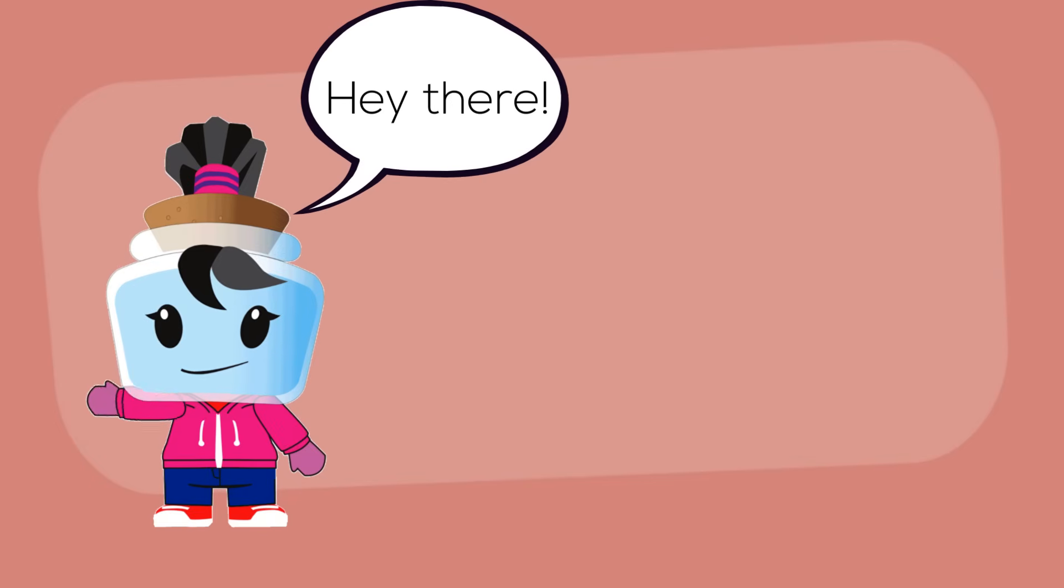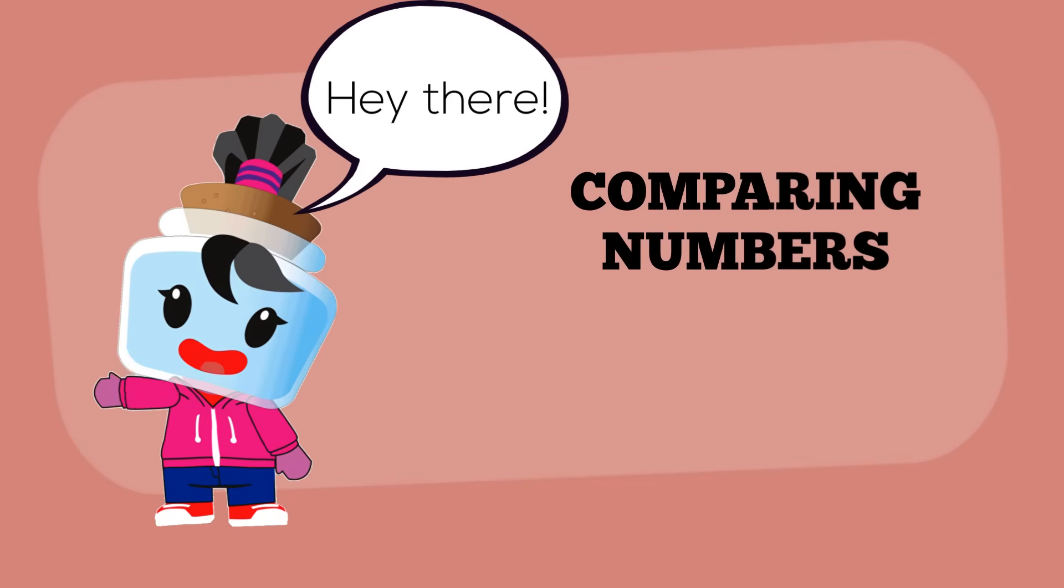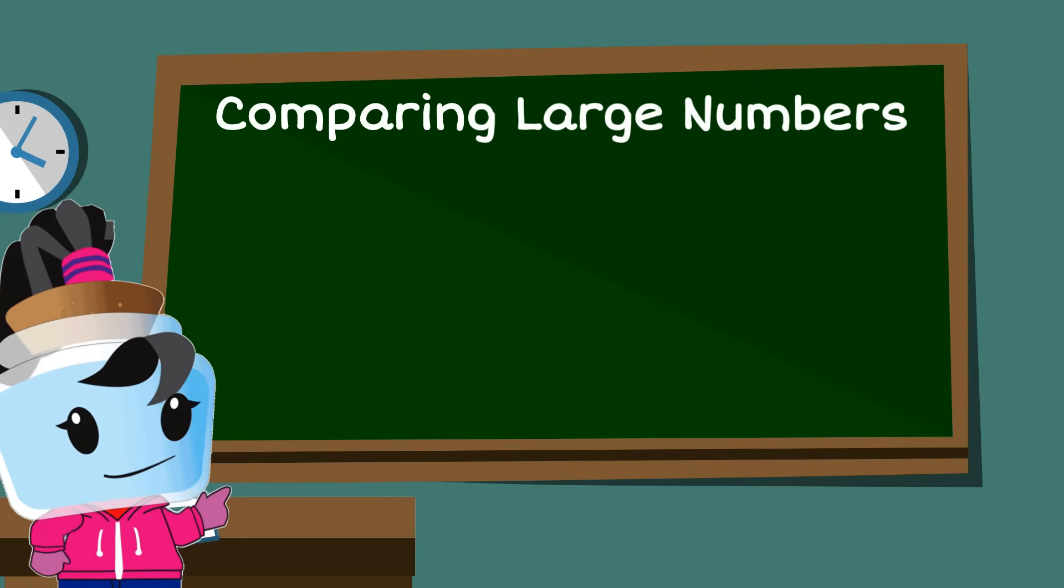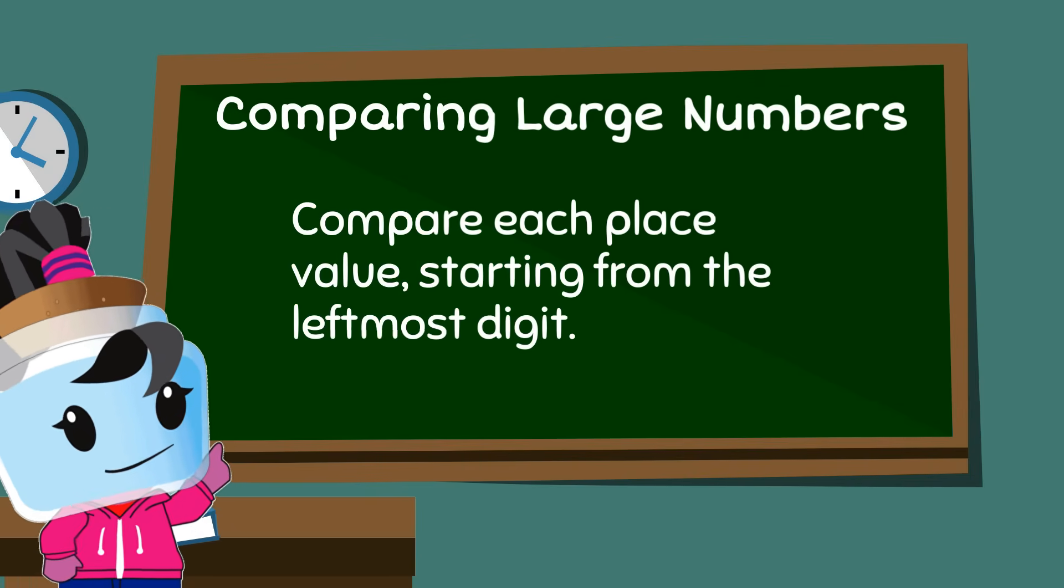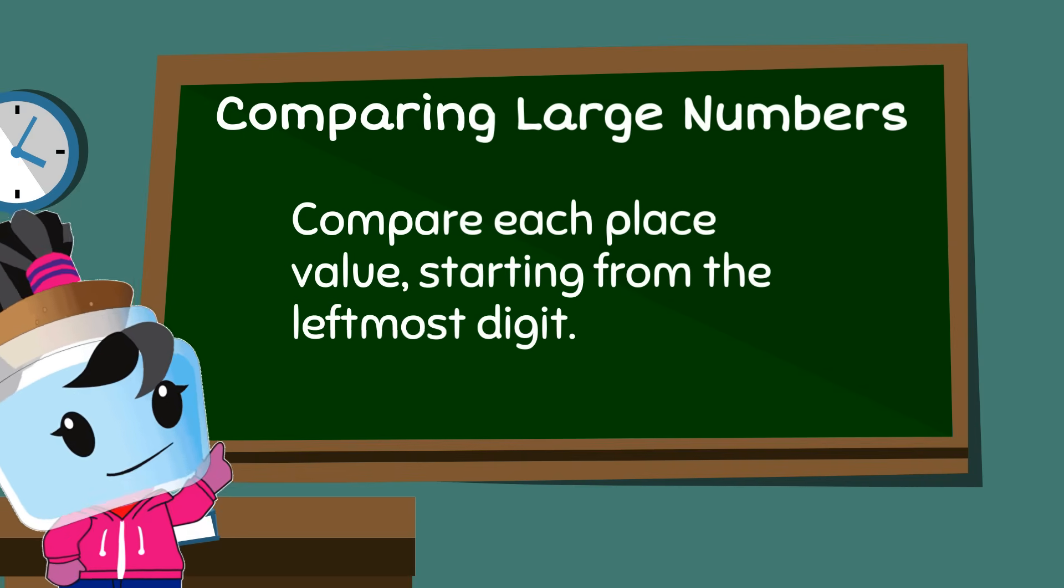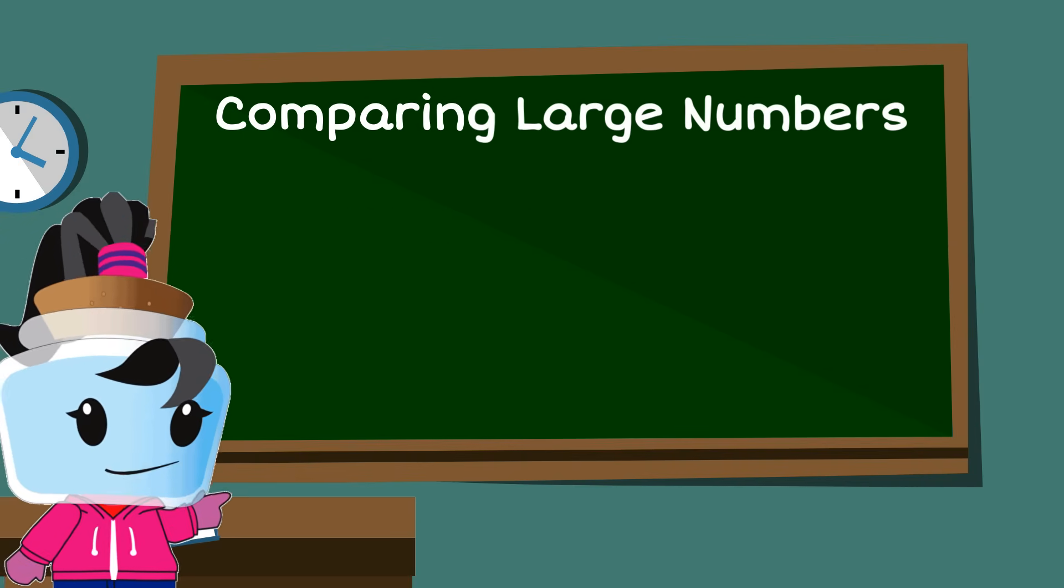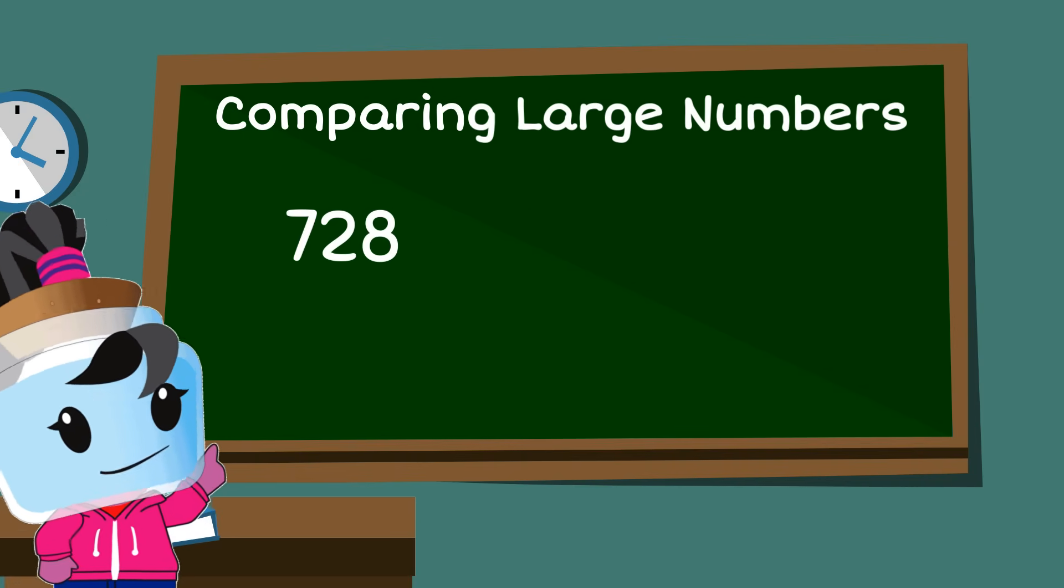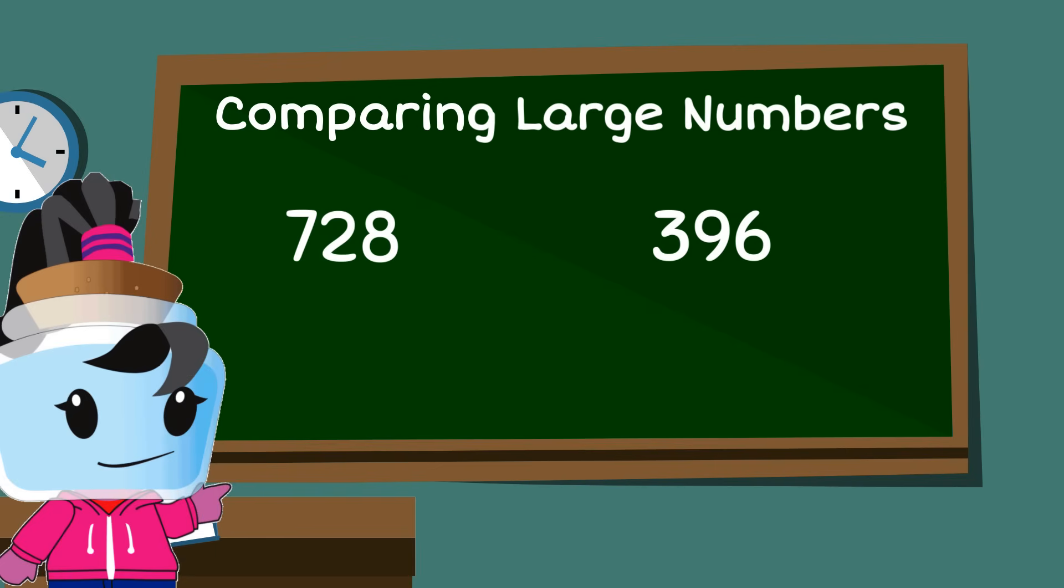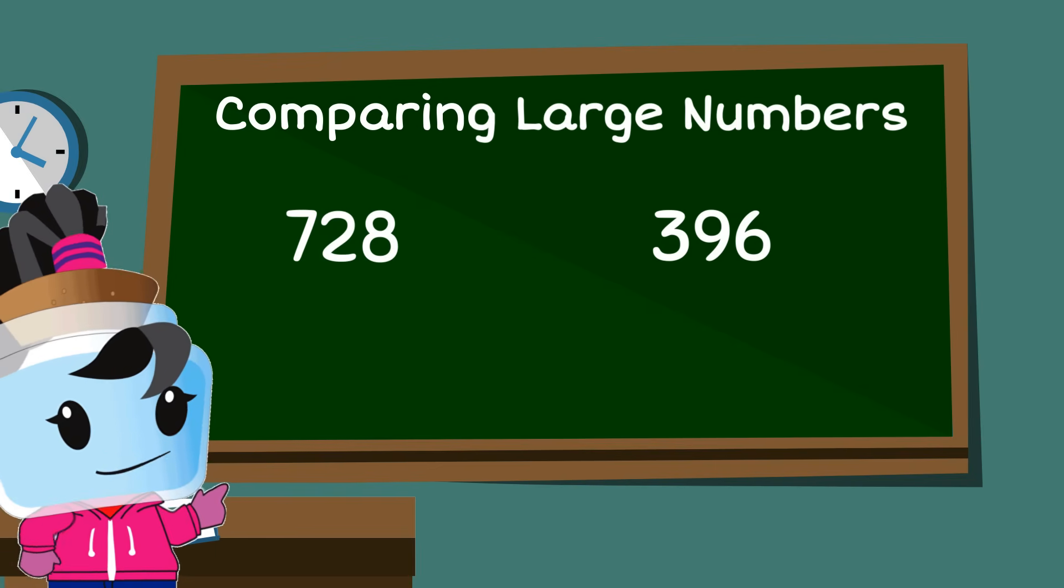Hey there! Today we will be comparing numbers up to 1,000. The best way when comparing large numbers is to compare each place value starting from the leftmost digit. For example, let's compare 728 and 396. Start by comparing the leftmost digits, which are in the hundreds place.